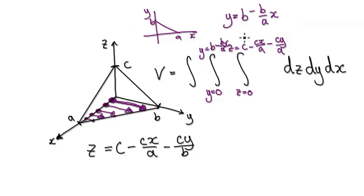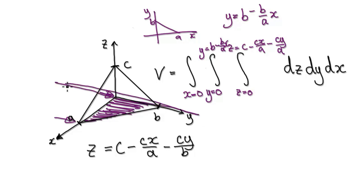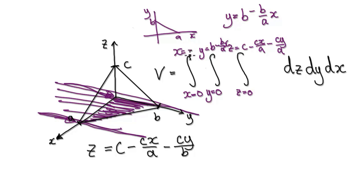And then for dx, you're scanning from x equals zero all the way through to x equals a. So x goes from zero to a.